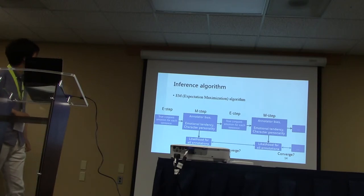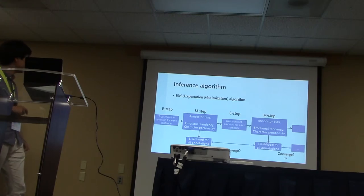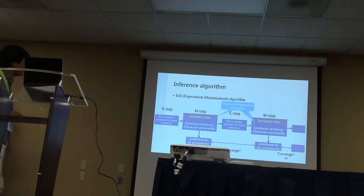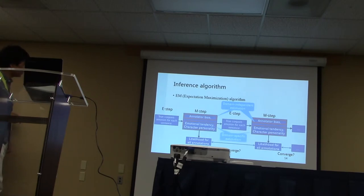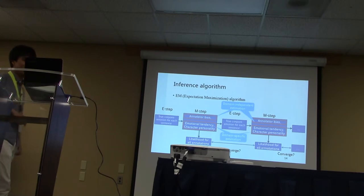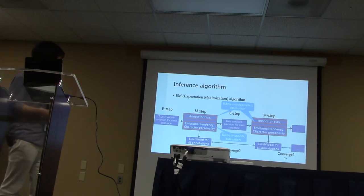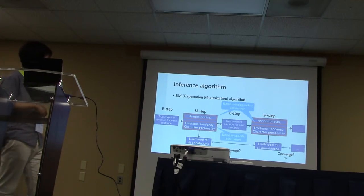We use an EM-based algorithm to infer the results. In the E-step, we estimate the expectations of the conjoined emotions for each sentence. In the M-step, we estimate the maximum likelihood estimates of the annotator bias — proposed in the domain-independent model — and the emotional tendency and character personality proposed in our domain-specific model. The E and M steps are iteratively performed until the likelihood for all annotations converges. At that point, the conjoined emotion with the maximum likelihood is determined as the true conjoined emotion for each sentence.